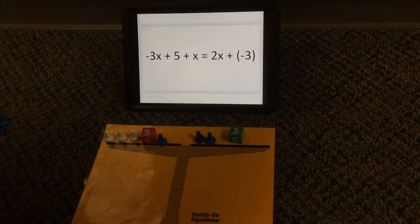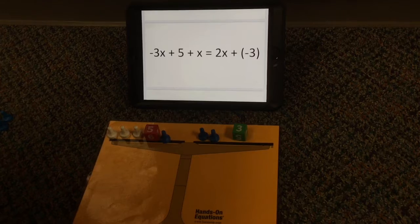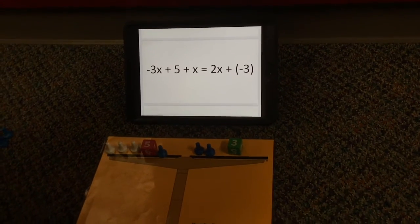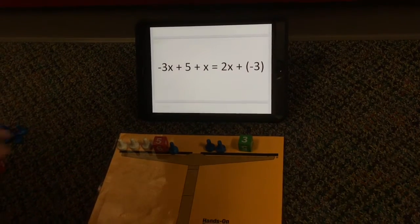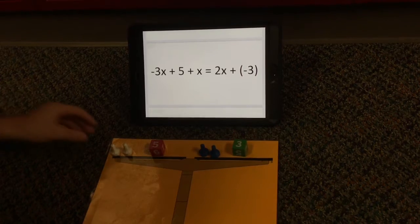Alright, for my last problem I have the opposite of 3x plus 5 plus x equals 2x plus the opposite of 3. So first we can take these away because they're a pair of zero and they're on the same side, so it's a legal move.